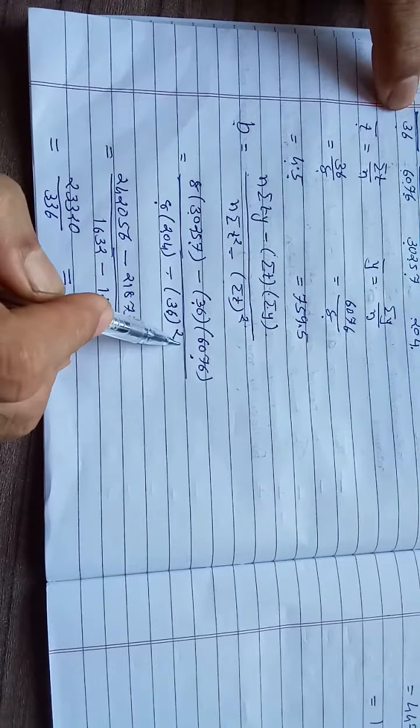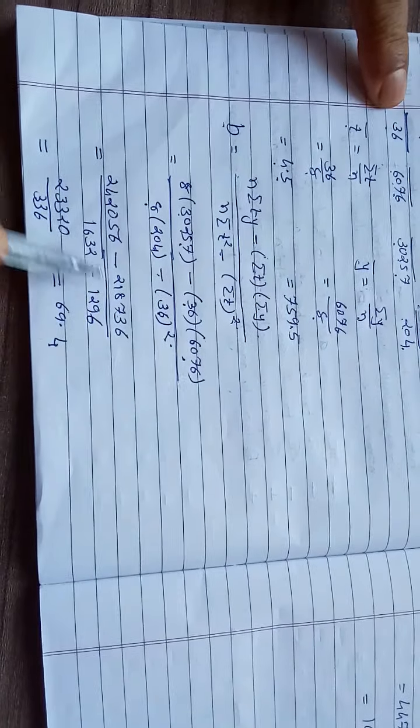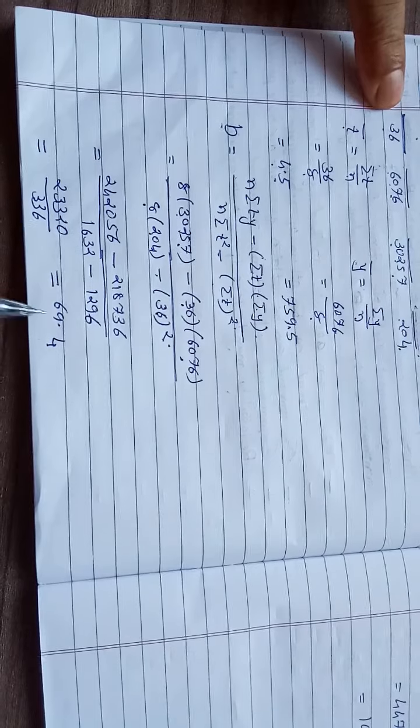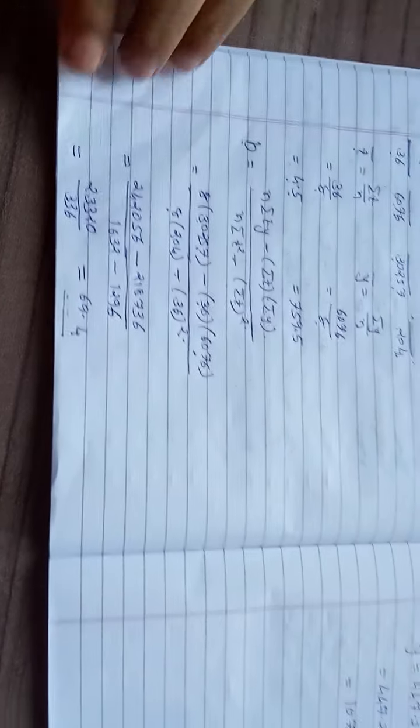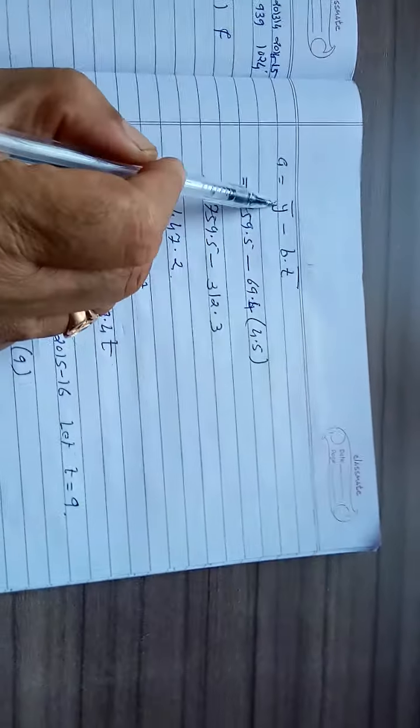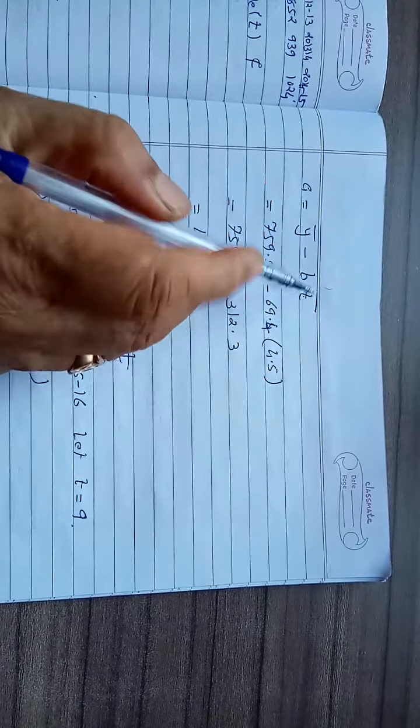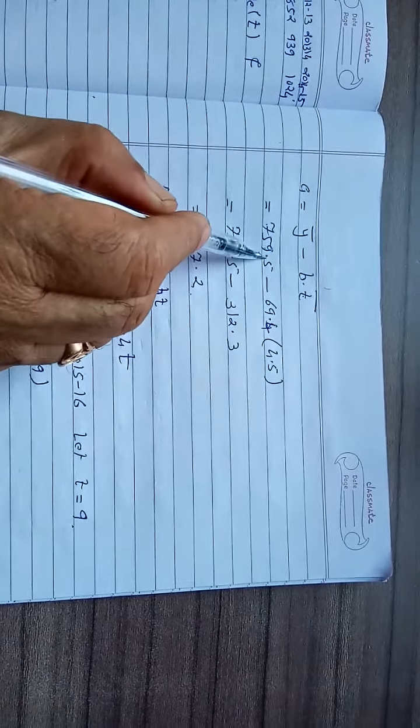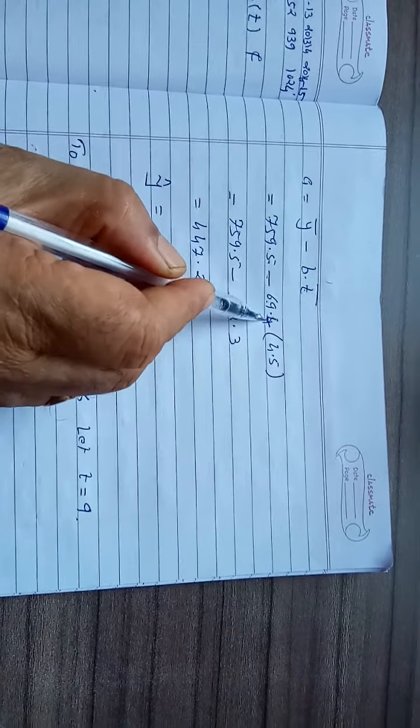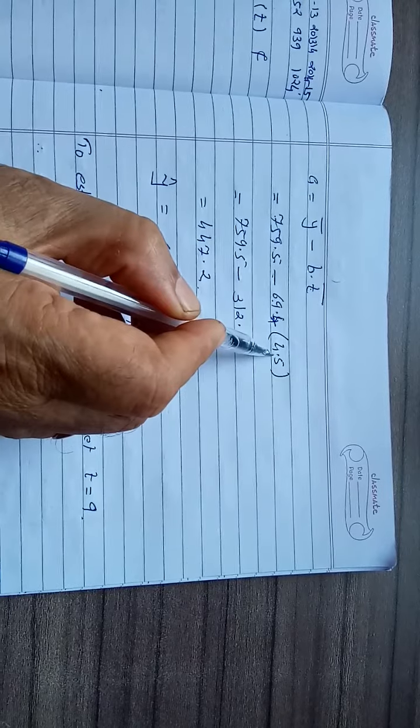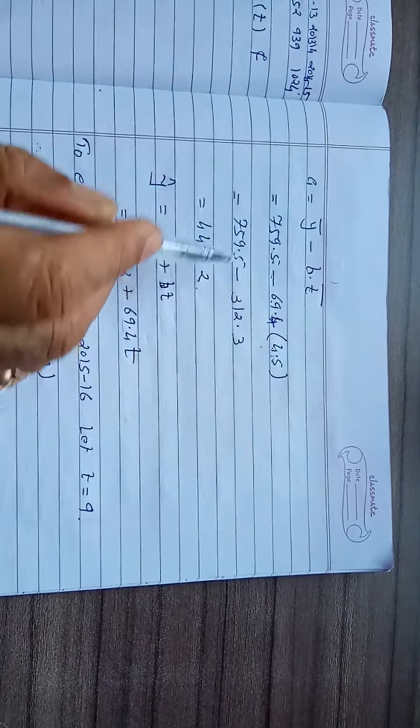Simplifying this, we get the value of b as 69.4. a is equal to y-bar minus b times t-bar. 759.5 is the value of y-bar, minus b is 69.4, and t-bar is 4.5.